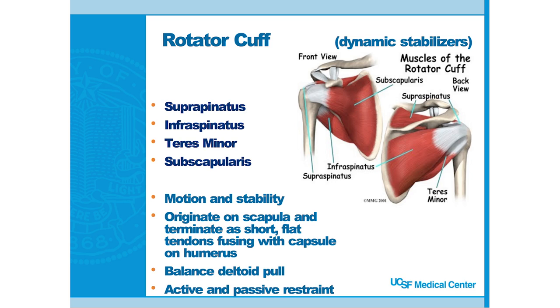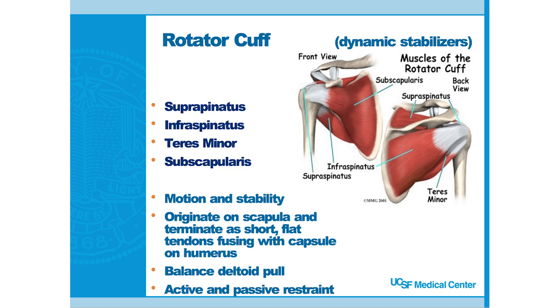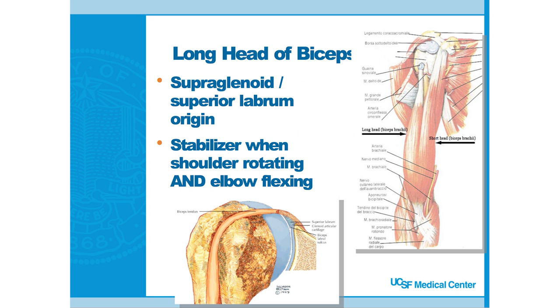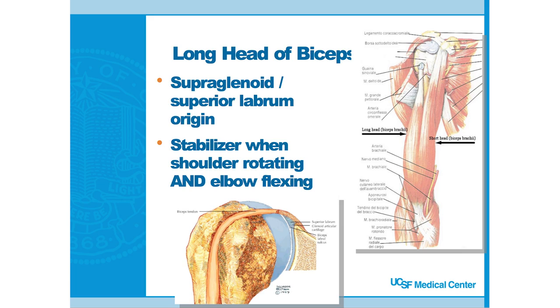The rotator cuff is the thing we always think about with the shoulder. It has four parts with different functions — just like the deltoid — allowing abduction, external rotation, and internal rotation of the shoulder. The long head of the biceps is a long, thin structure that attaches to the biceps muscle and goes up the front of the shoulder and into the shoulder joint proper. It's also a problem child and can cause a lot of anterior shoulder pain.